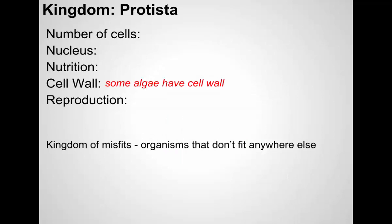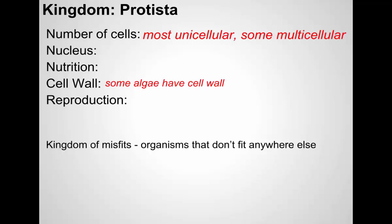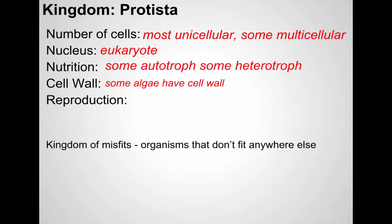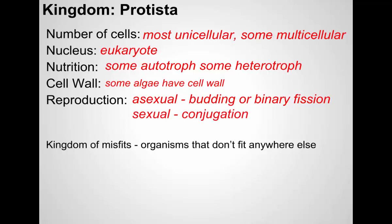Kingdom Protista, or protists — this was the catch-all. This is where scientists put things they didn't know where to put. They're generally aquatic. They were always thought to be unicellular, but there are some multicellular groups. They're eukaryotic — they have a nucleus. Their nutrition varies; some are autotrophs, some are heterotrophs. Some algae have a cell wall; most protists do not. They can reproduce asexually or sexually. As you can see, there isn't much consistency in what actually makes a protist, which is why we call this the kingdom of misfit — just throw everything that's small and lives in water into this group.